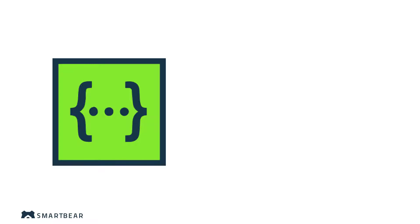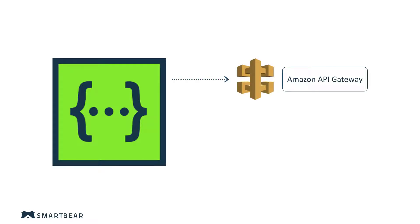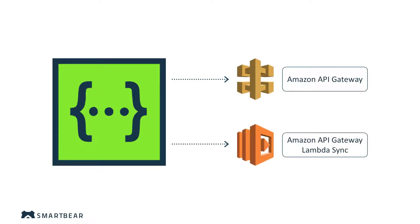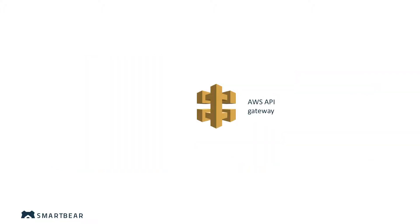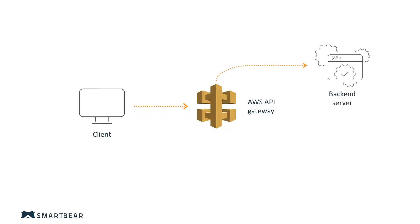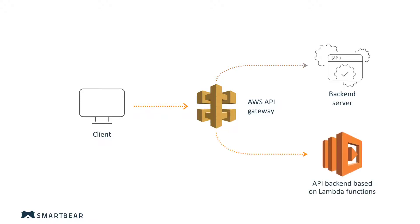SwaggerHub has two Amazon API Gateway integrations available: Amazon API Gateway and Amazon API Gateway Lambda Sync. The first one, Amazon API Gateway, also known as a proxy, is for when you have an existing API server and want to add a management layer on top of it. Lambda Sync is for a new API for which you want to develop a backend using Lambda functions.